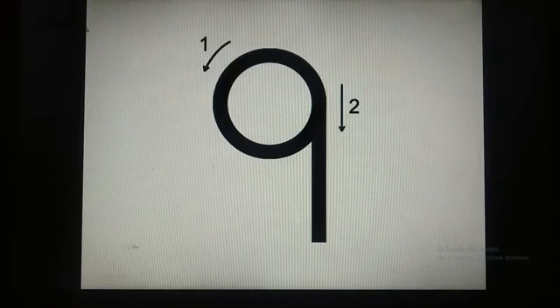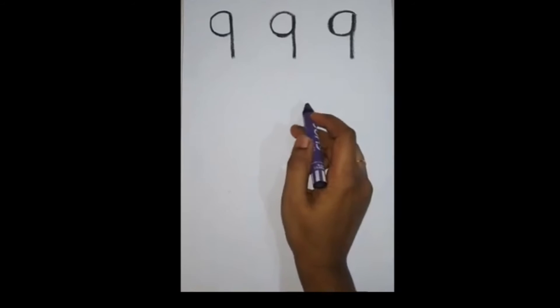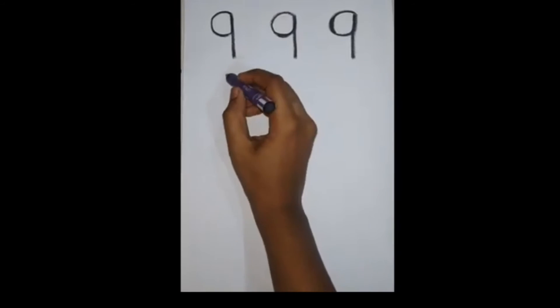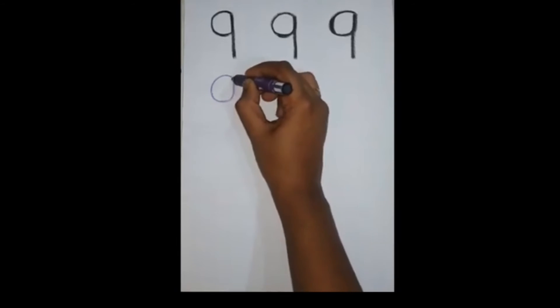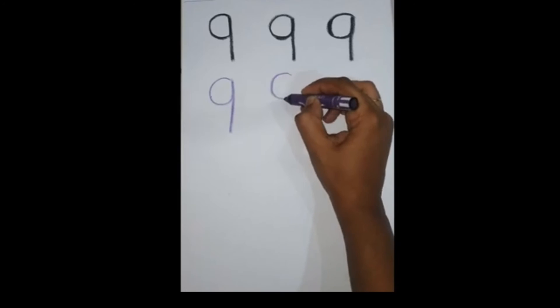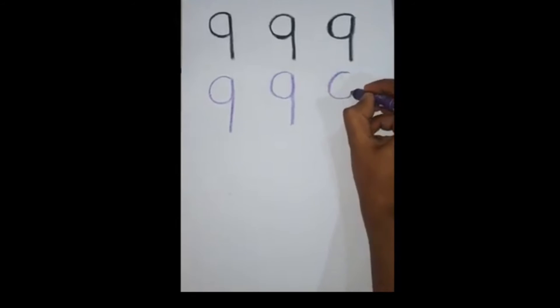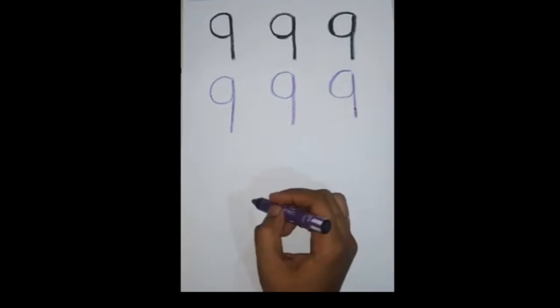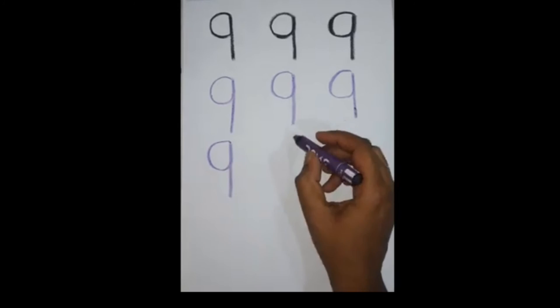Now children, we will write in the book the number 9. So children, let's write the number 9. You make a C, you go up and come down standing line. Number 9. You make a C, you go up and you come down standing line. Number 9.